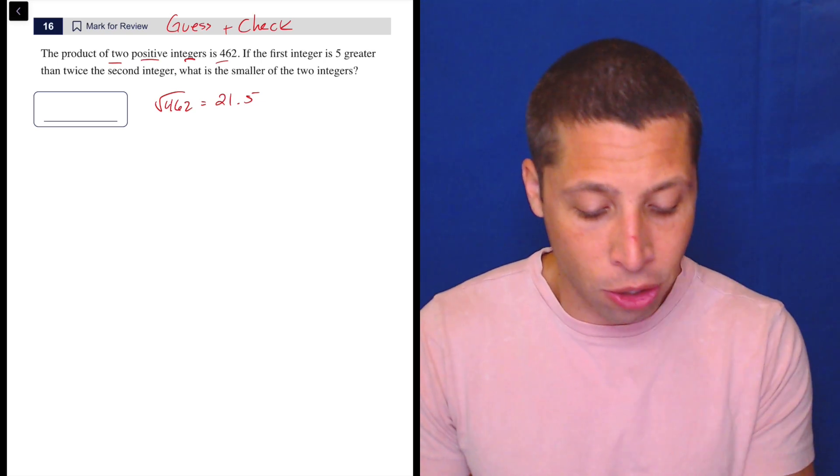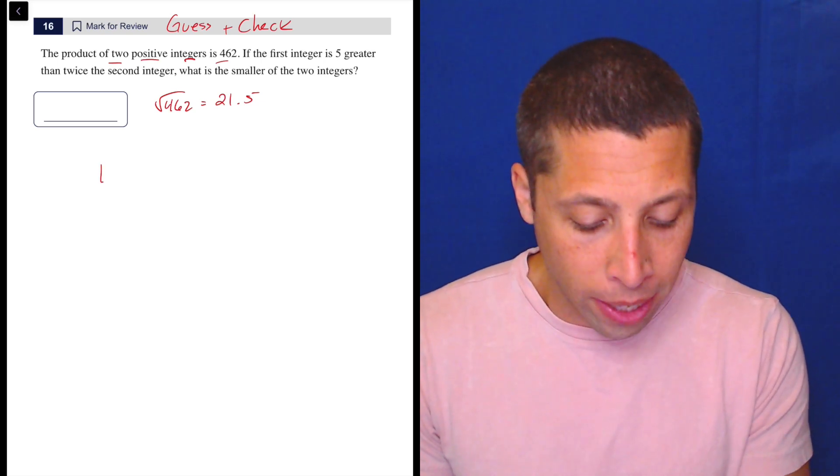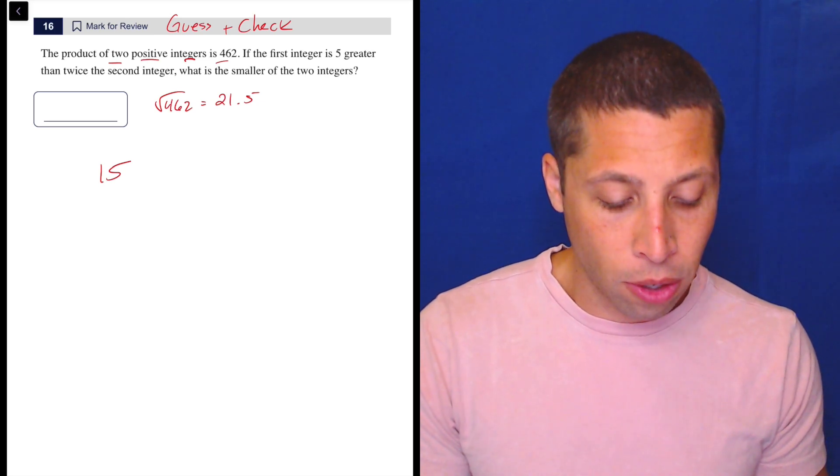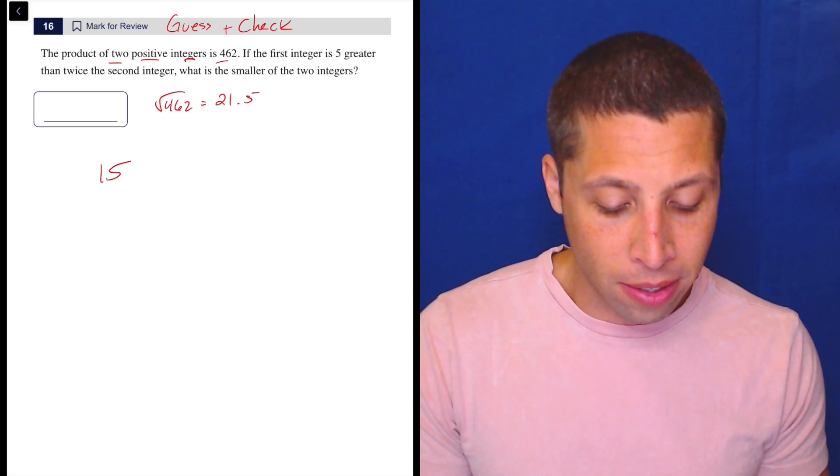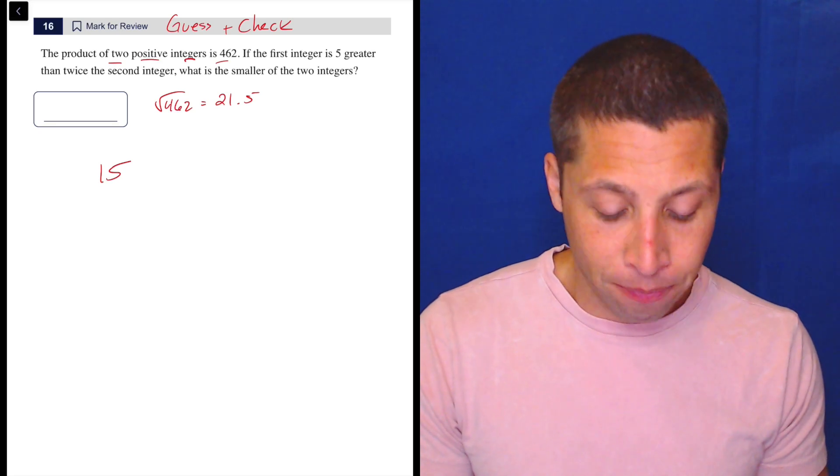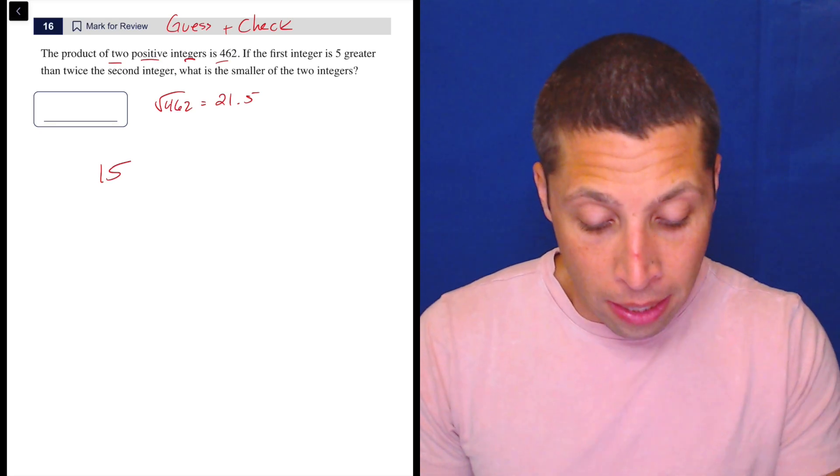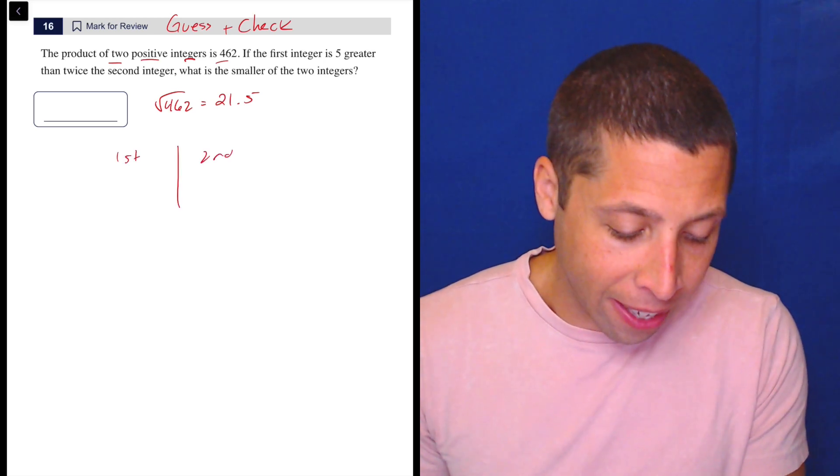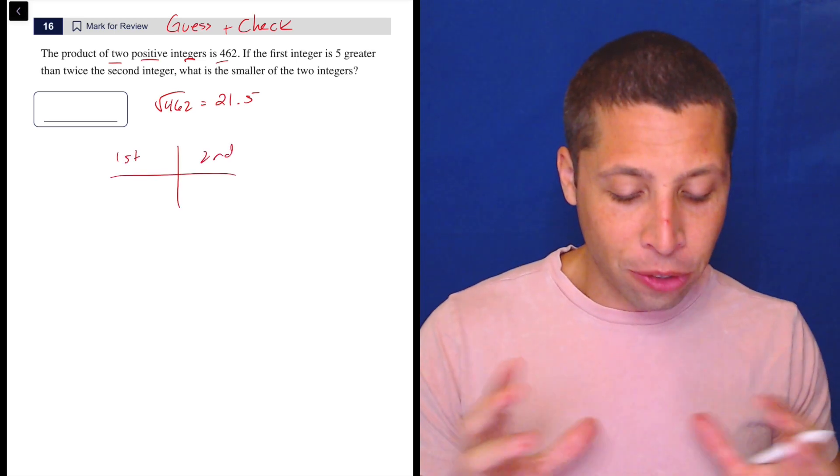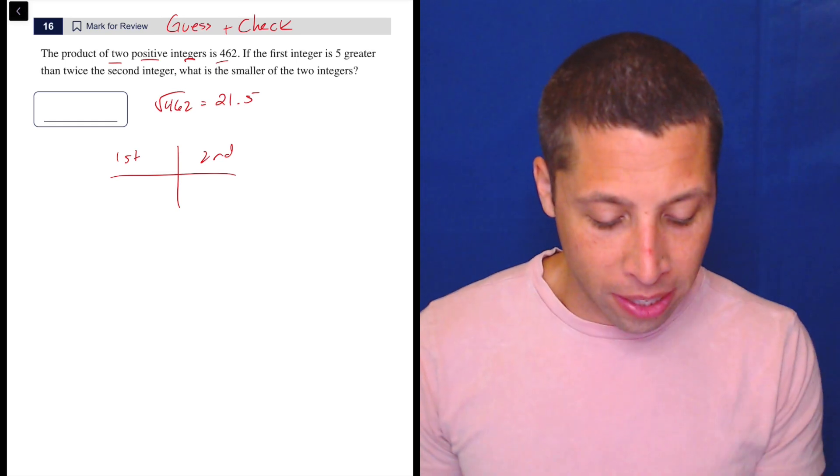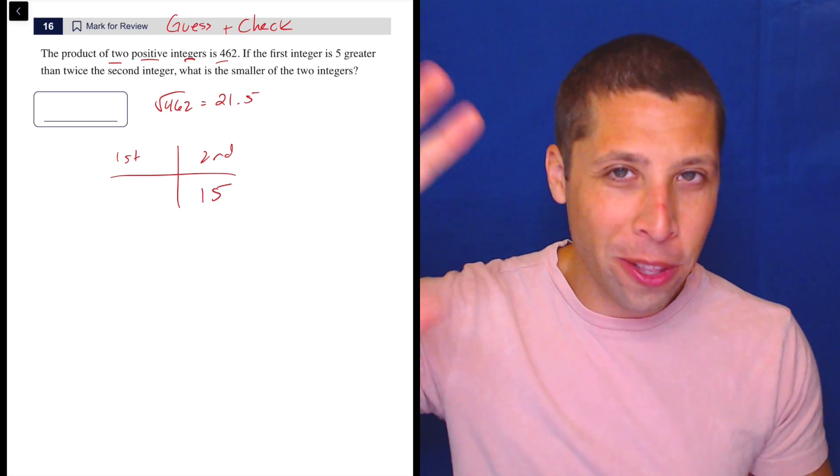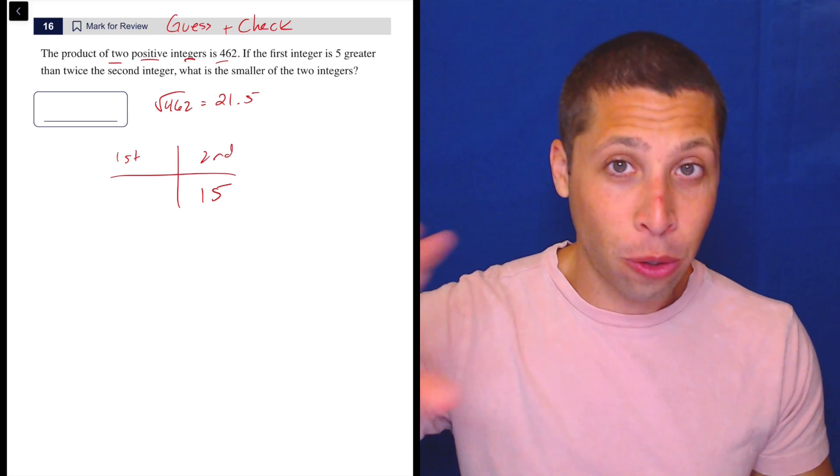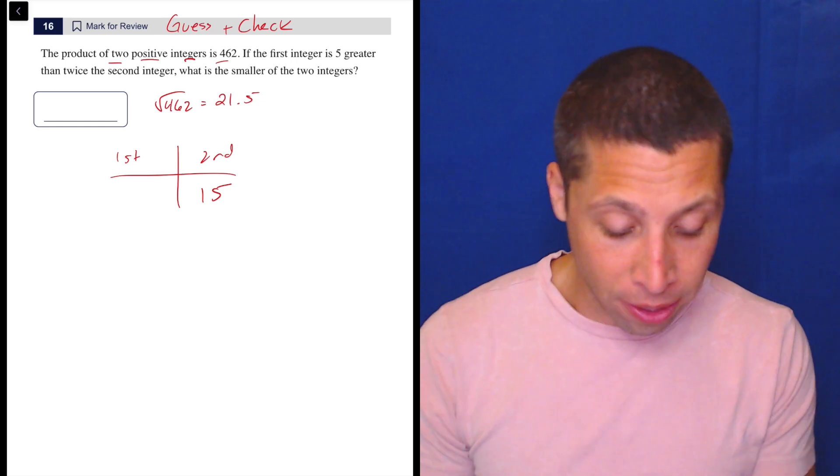So I might just do like, what if one of the integers was 15? So if the first integer is five greater than twice the second integer, the first integer is five greater than twice the second. I'm writing this kind of stupidly, but let's make some more space here. We have the first integer and the second. The way this is phrased, the first integer is five greater than twice the second. I'm picking the second integer because that's the one that's simpler. So twice 15 is 30, five greater than that is 35.